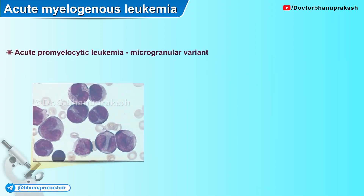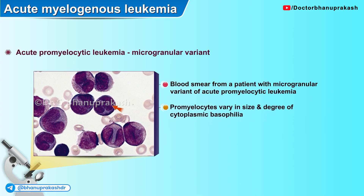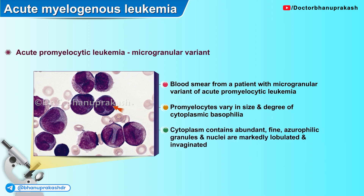Here is a blood smear from a patient with the microgranular variant of acute promyelocytic leukemia. The promyelocytes vary in size and degree of cytoplasmic basophilia. The cytoplasm contains abundant fine azurophilic granules, and the nuclei are markedly lobulated and invaginated.